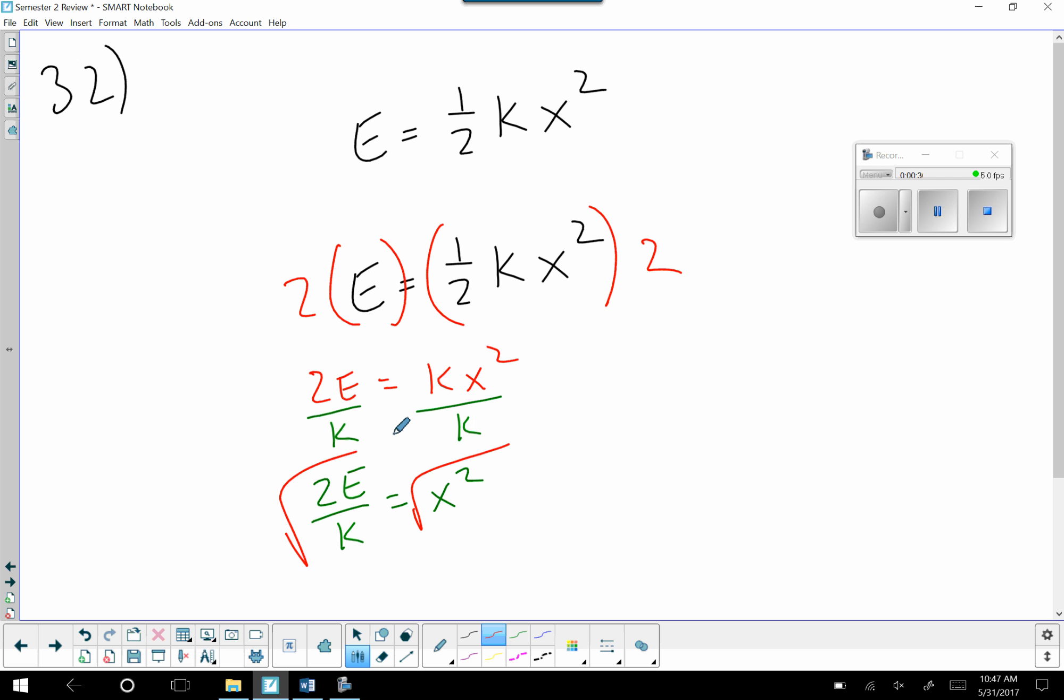And then we're going to take the square root. So we say x equals the square root of 2e over k.